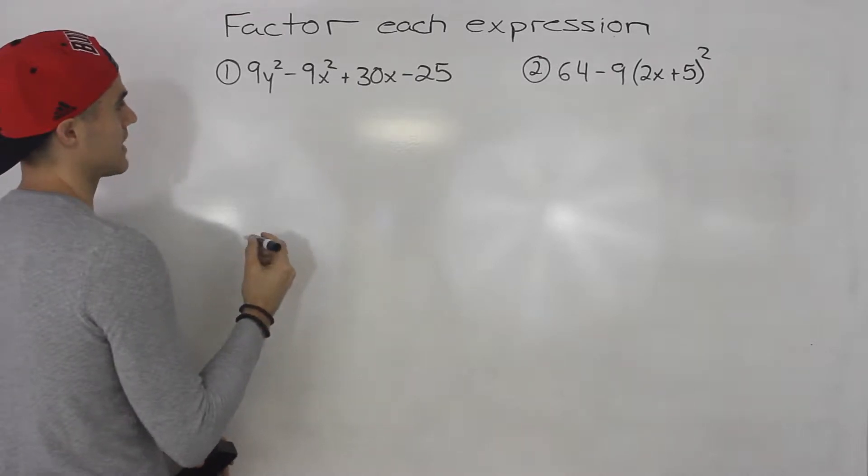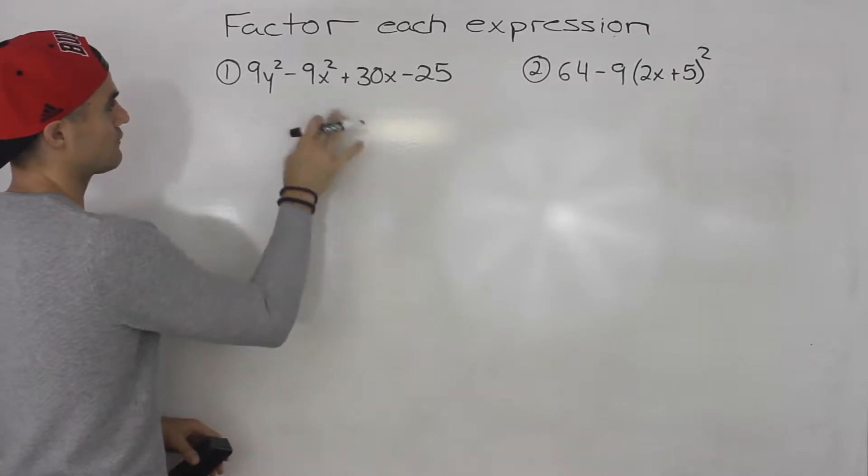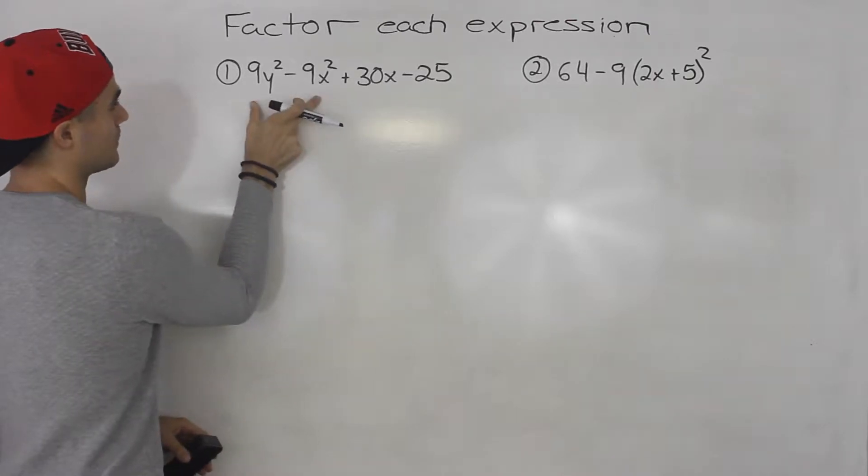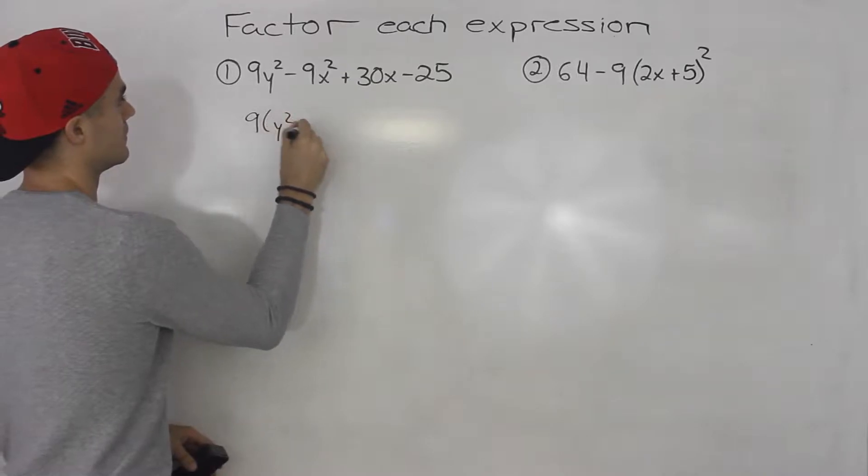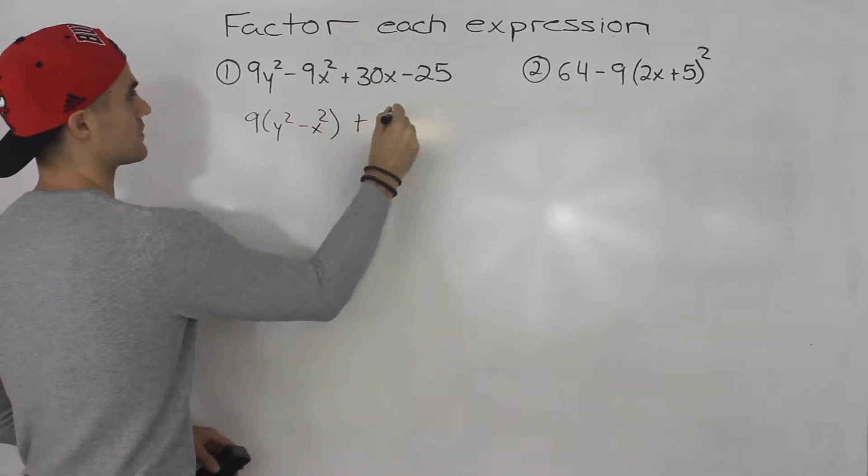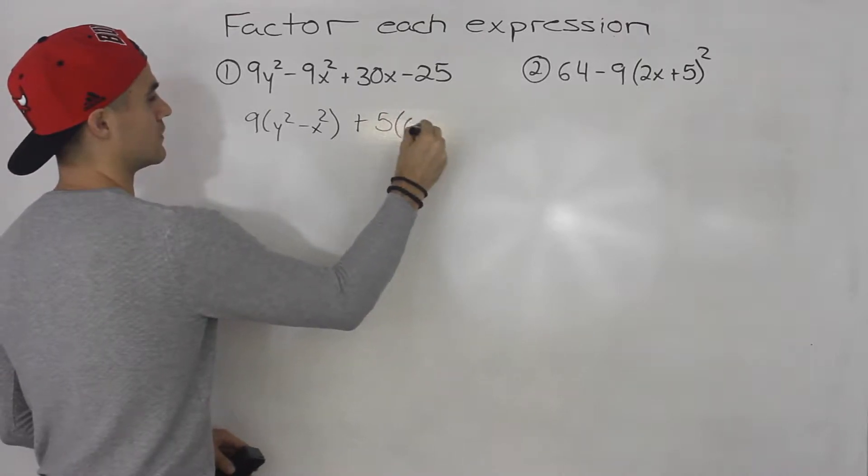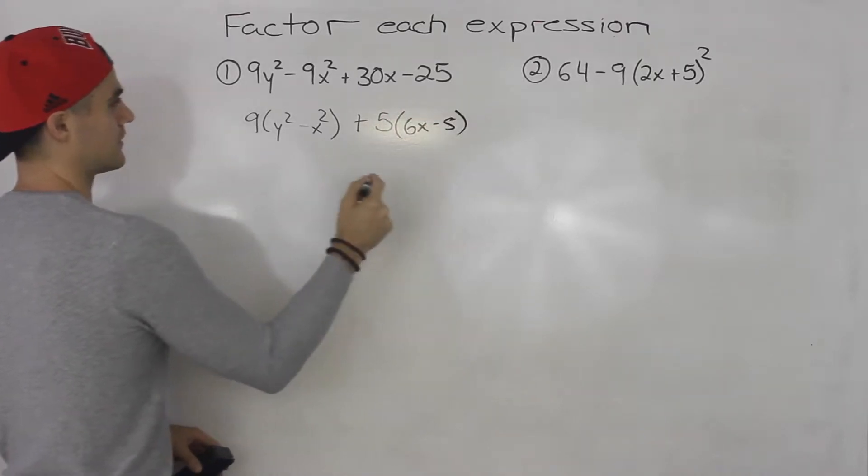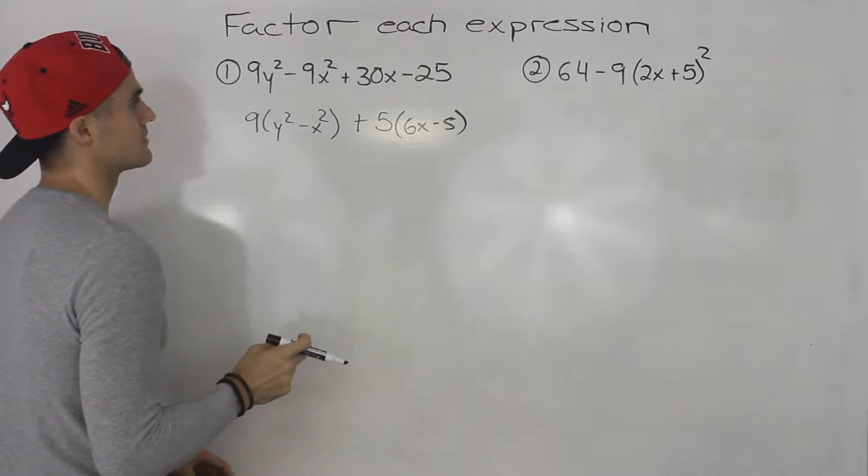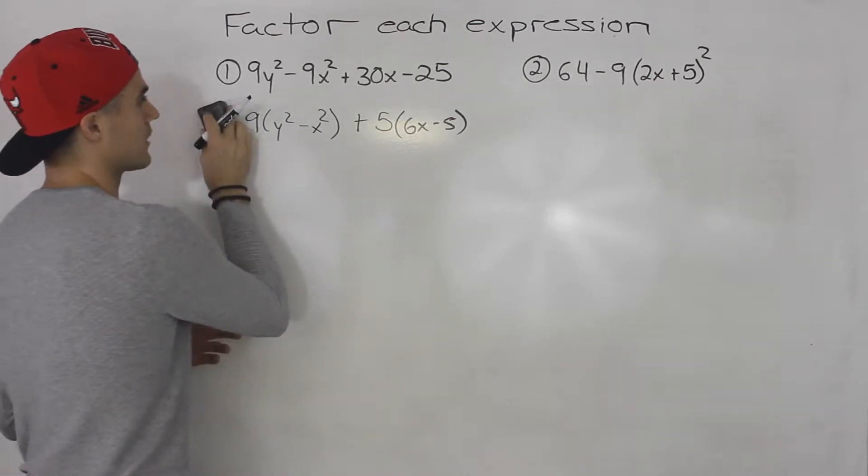Now in this case, notice if we try to factor it by grouping, it's not really going to work out because we could take out a 9 from these two and then we could take out a 5 from these two. But then notice that this bracket, this bracket, they don't really relate. So grouping is not going to work.